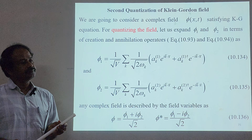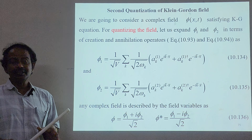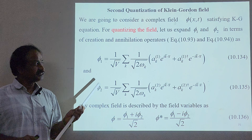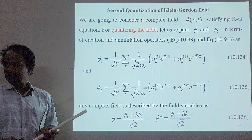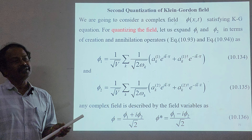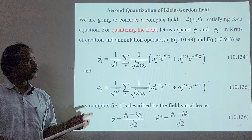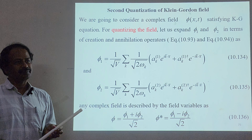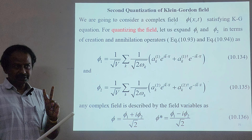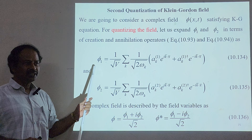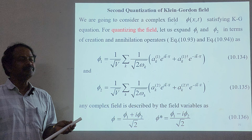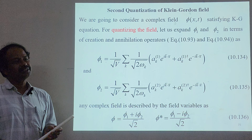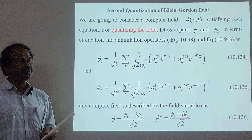In learning about fields, we already know field functions and field operators. The field operators are: phi which depends on x and t, and pi (π), which is the momentum density. So there are two major entities: the field function phi depending on position and time, and the pi operator which is the momentum density, also depending on position and time.